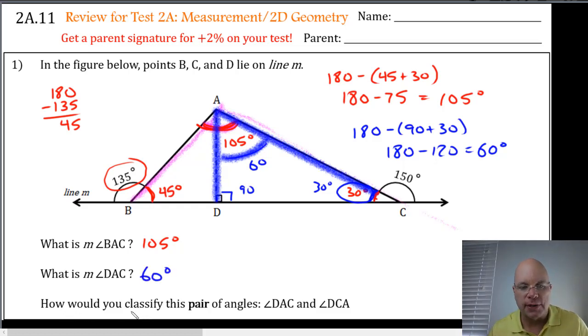The last question asks, how would you classify? That means name. How would you name this pair of angles? Angle DAC we just identified as 60 degrees, and angle DCA is this angle, this 30 degree angle. Since the sum of those two angles is 90 degrees, we would classify them as complementary angles.